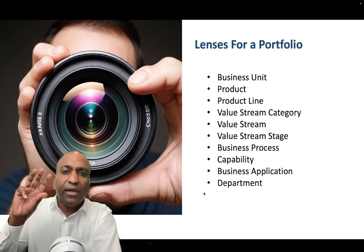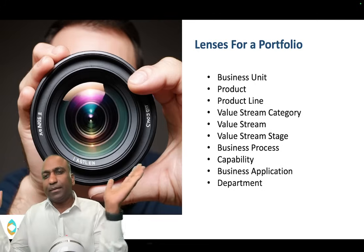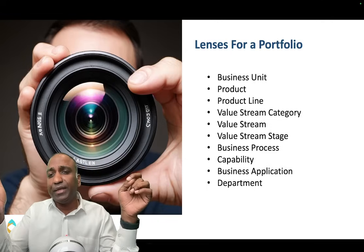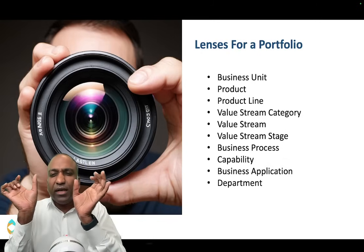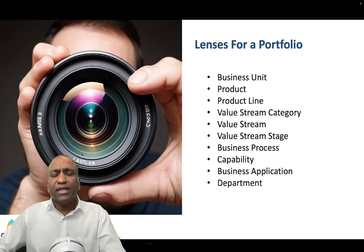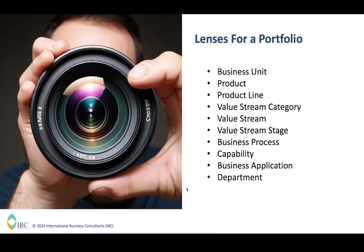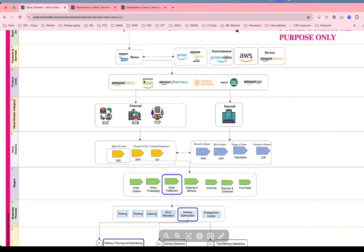Hence I'm introducing the term 'lenses.' There are multiple lenses a portfolio should be capable of providing as data views — for example: by business unit, product or product line, value stream category (such as B2B order to cash), a specific stage of a value stream (like order fulfillment), or the various business processes. It's important to provide these lenses. In the next series I'll show the hands-on demo, but now let me go back and show some even cooler demos in ServiceNow — let me show you how value streams are managed there.